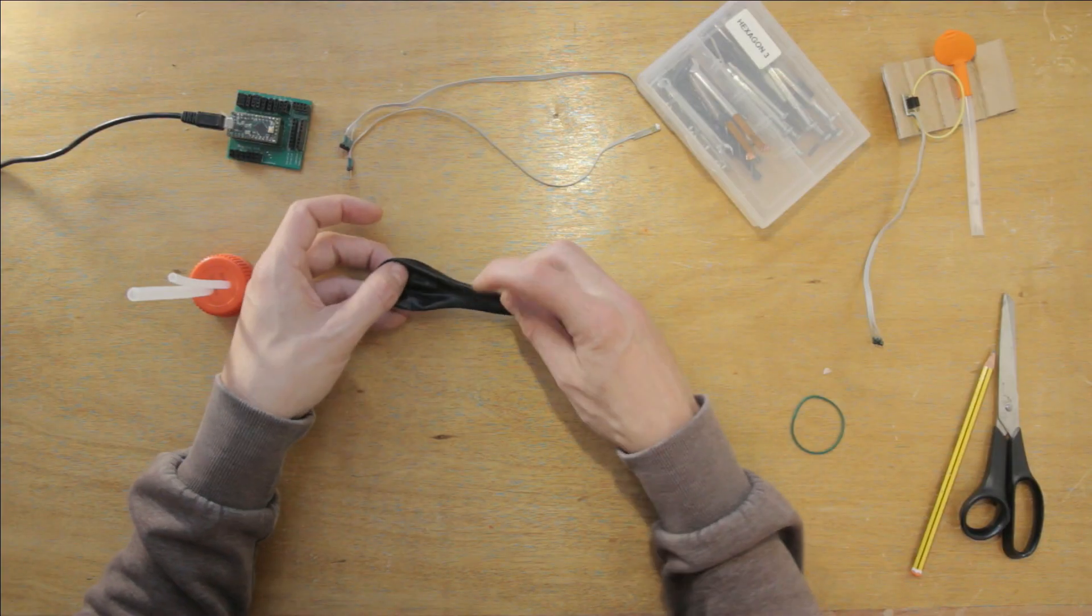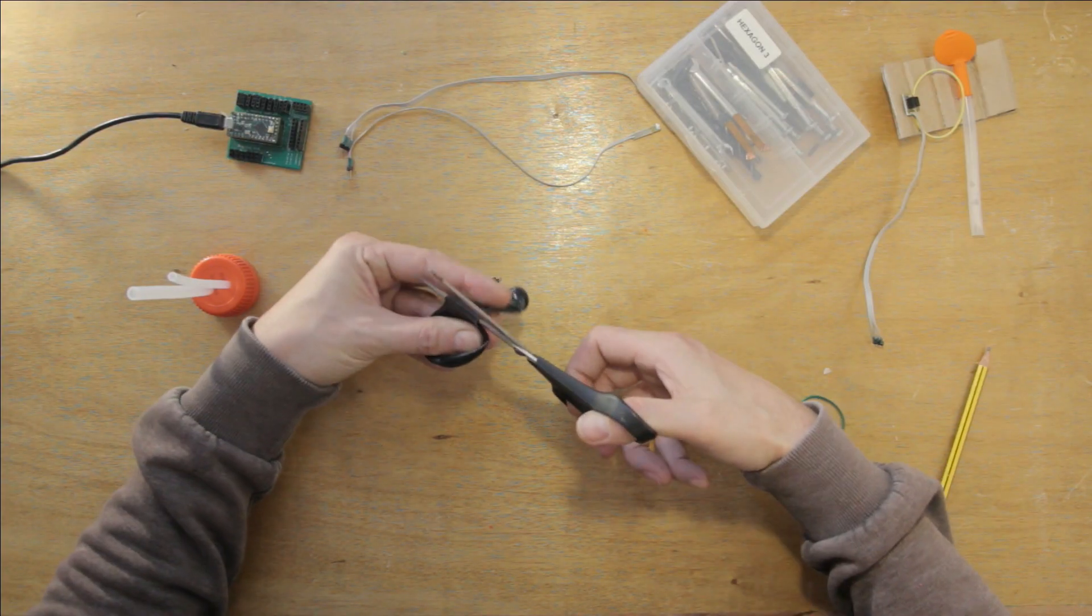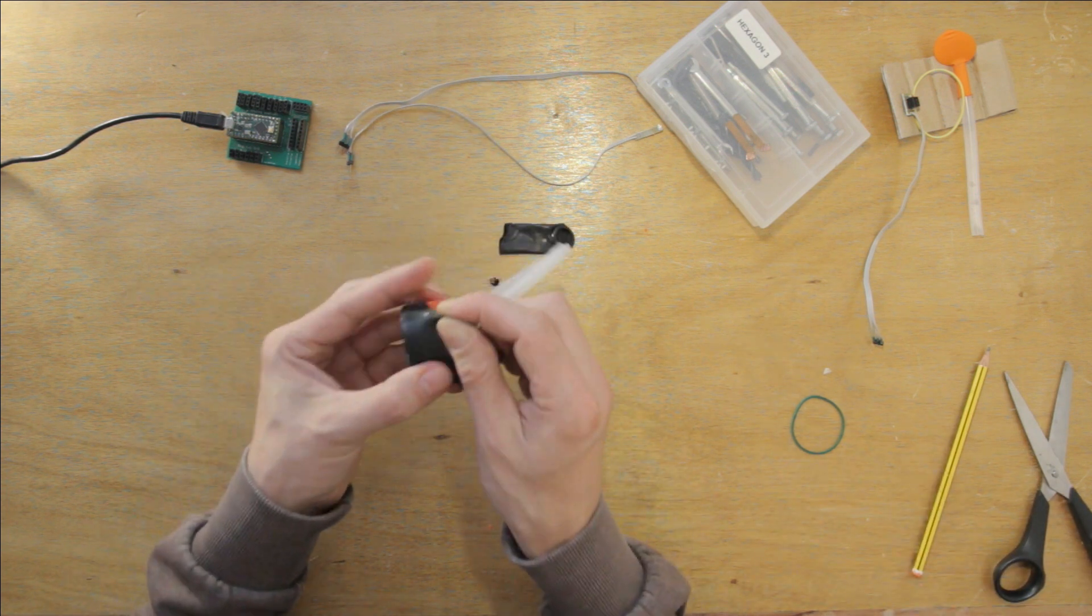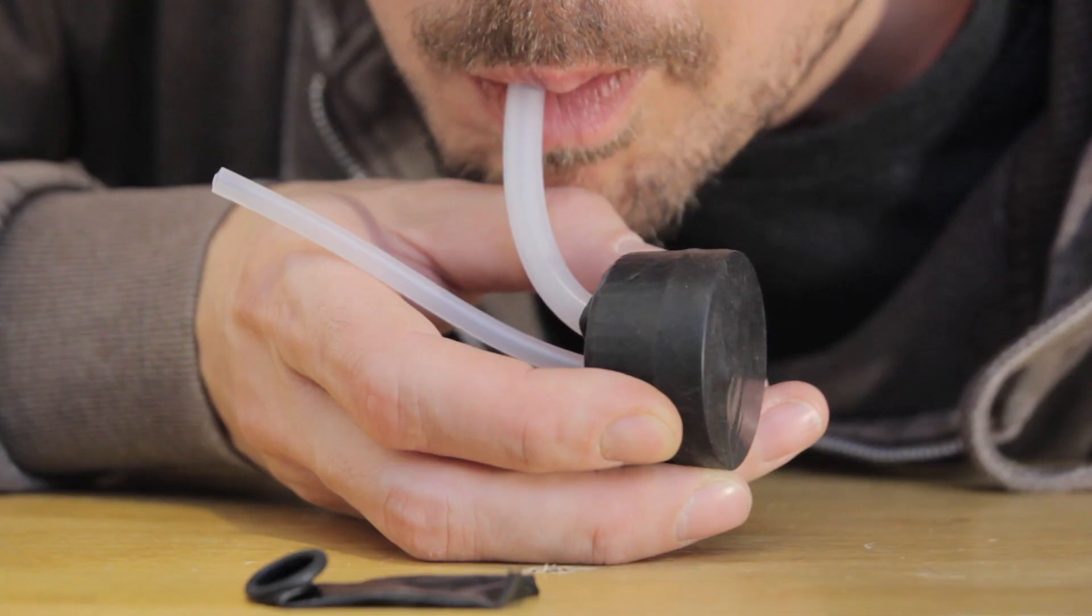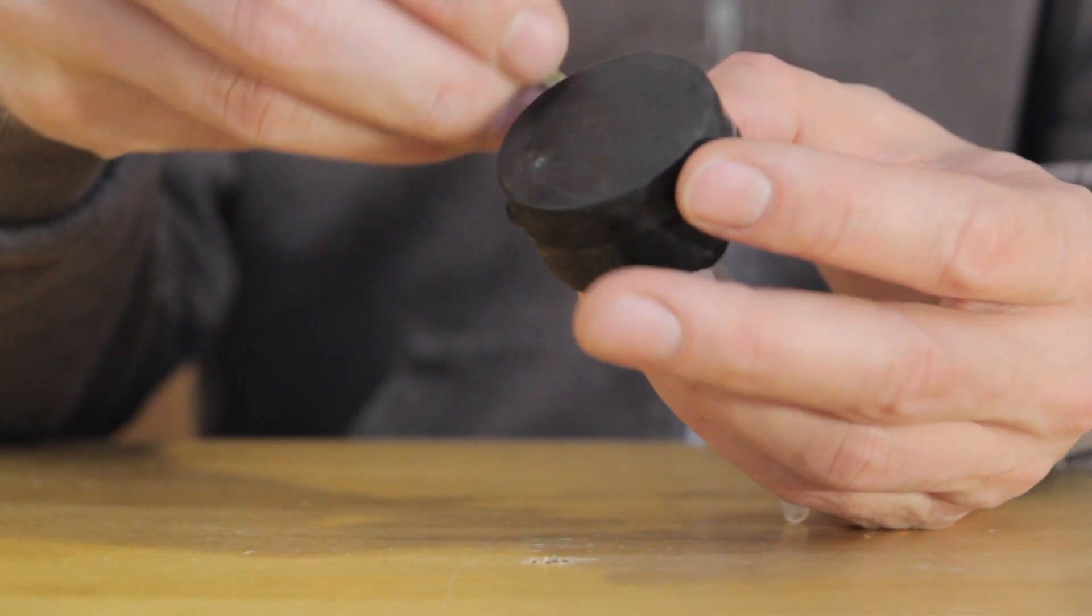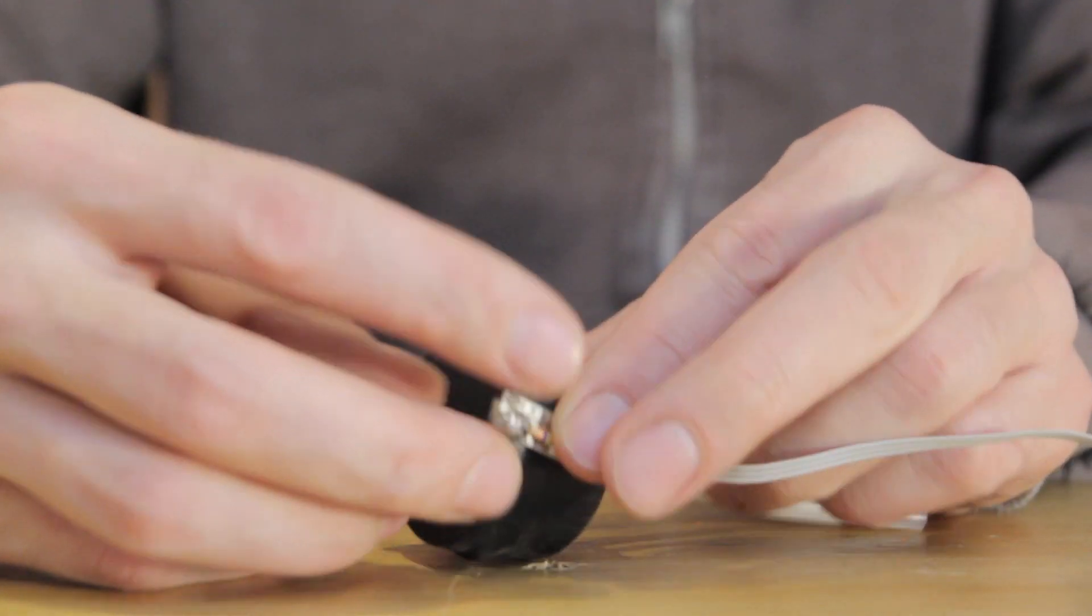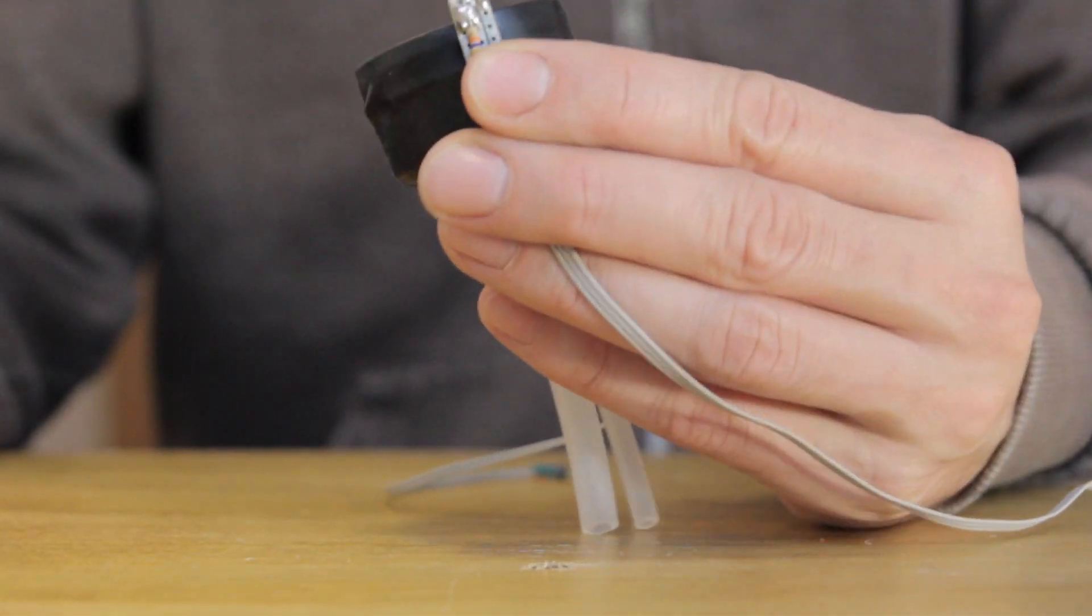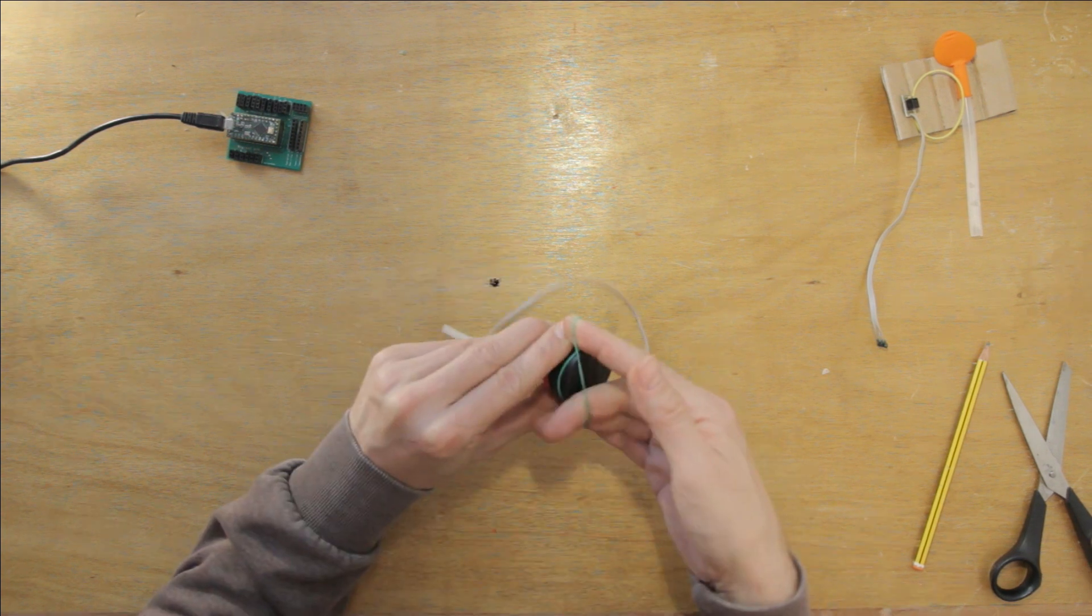Now it's time for the membrane. Cut off the end of the balloon like this. Then stretch it over the pressure chamber like this. The result should look something like this. Next up attach the modules with the sensor and the LED. Simply line them up across from each other and then stretch a rubber band around the whole assembly like this.